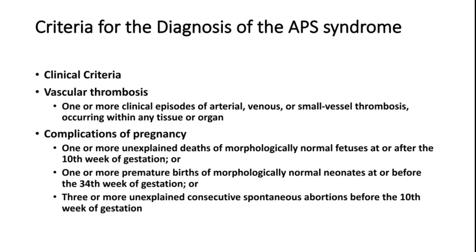The criteria for antiphospholipid syndrome include vascular thrombosis and complications of pregnancy. Vascular thrombosis means one or more clinical episodes of arterial, venous, or small vessel thrombosis in any tissue or organ. Pregnancy complications include: one or more unexplained deaths of morphologically normal fetuses at or after the 10th week of gestation; one or more premature births before the 34th week; or three or more unexplained consecutive spontaneous abortions before the 10th week of gestation.